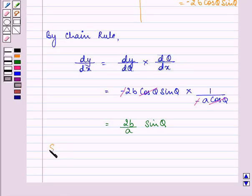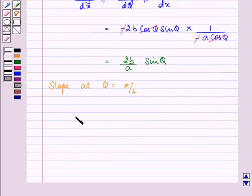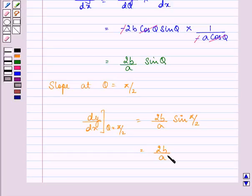Now slope at theta equal to pi by 2 is dy by dx at theta equal to pi by 2 will be 2b by a sine pi by 2 which is 1. So we have the answer as 2b by a that is the slope at theta is equal to pi by 2.